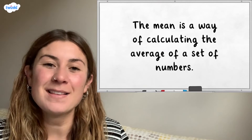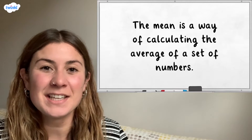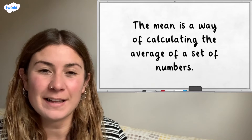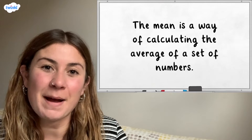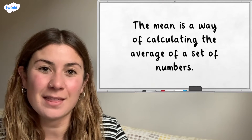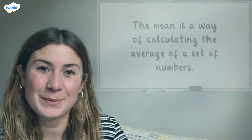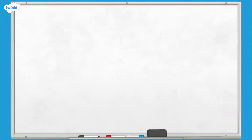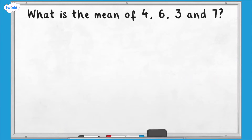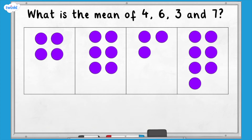In maths we calculate the mean by adding together all of the values and then dividing by the number of values that we started with to find the average value. We can use counters to represent finding the mean of the numbers 4, 6, 3 and 7.